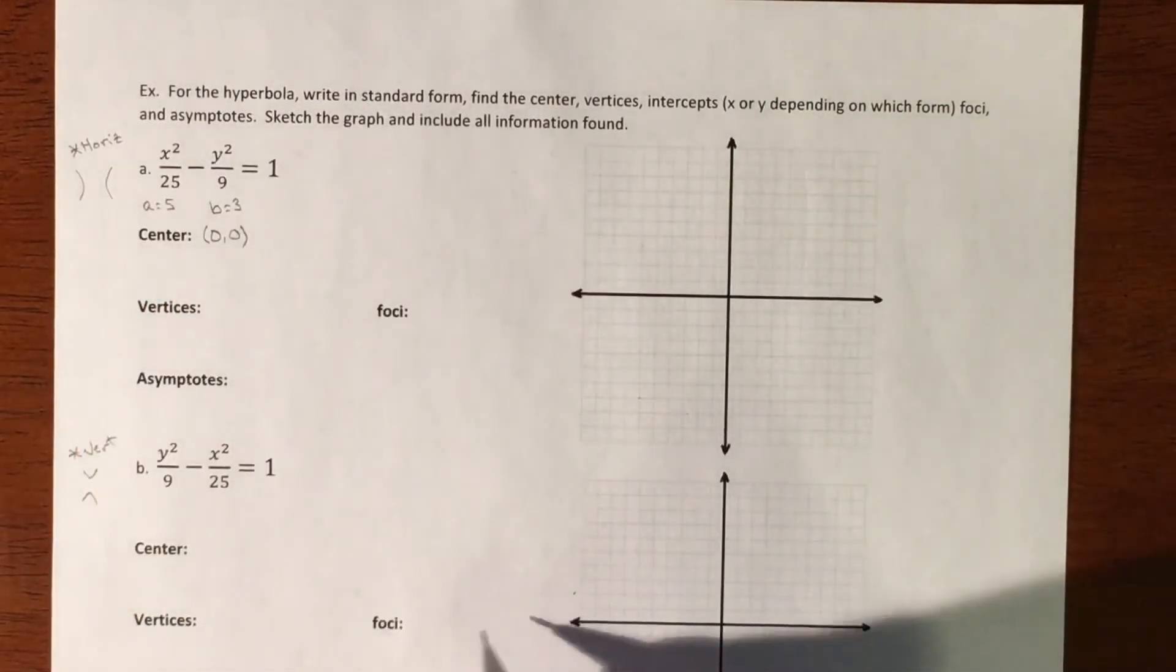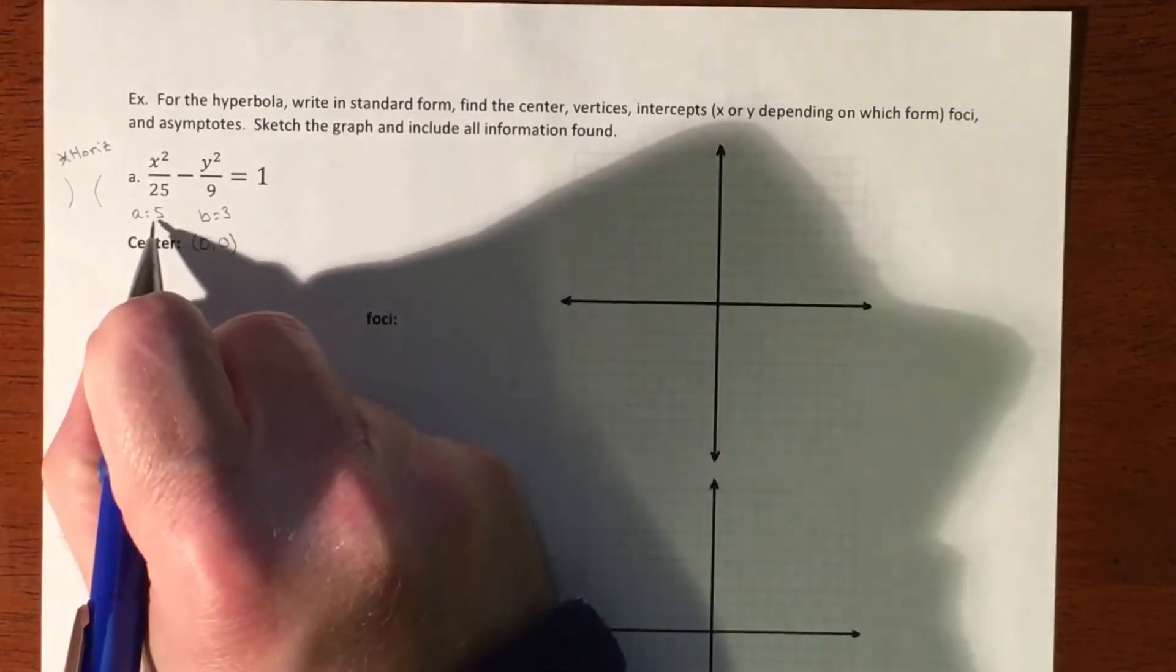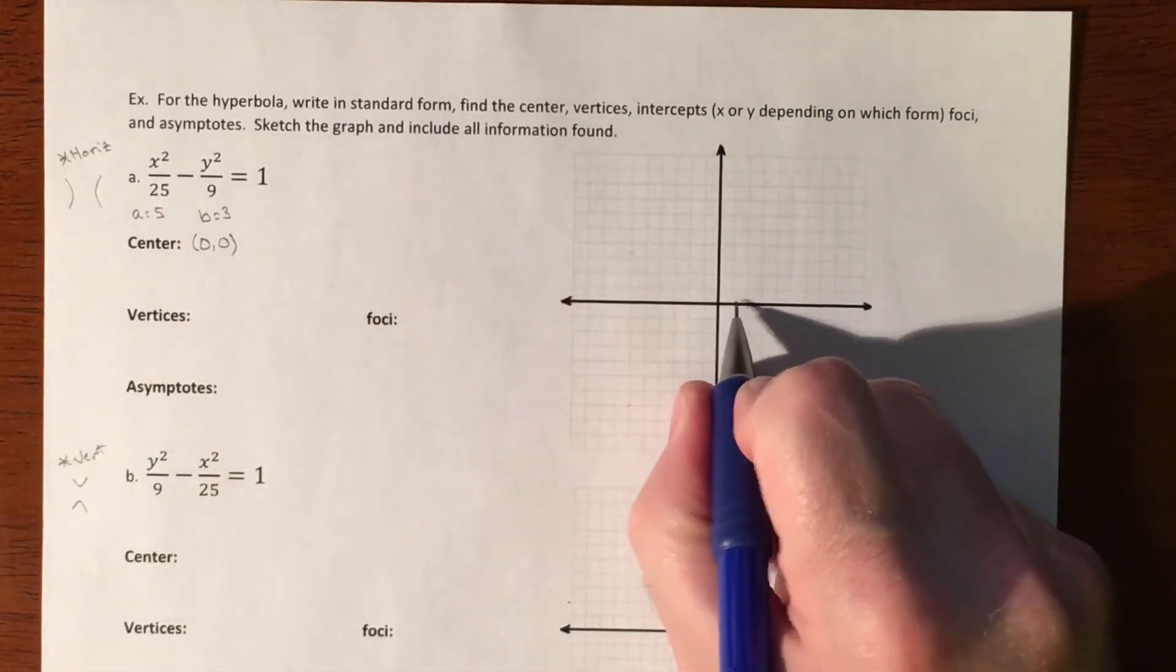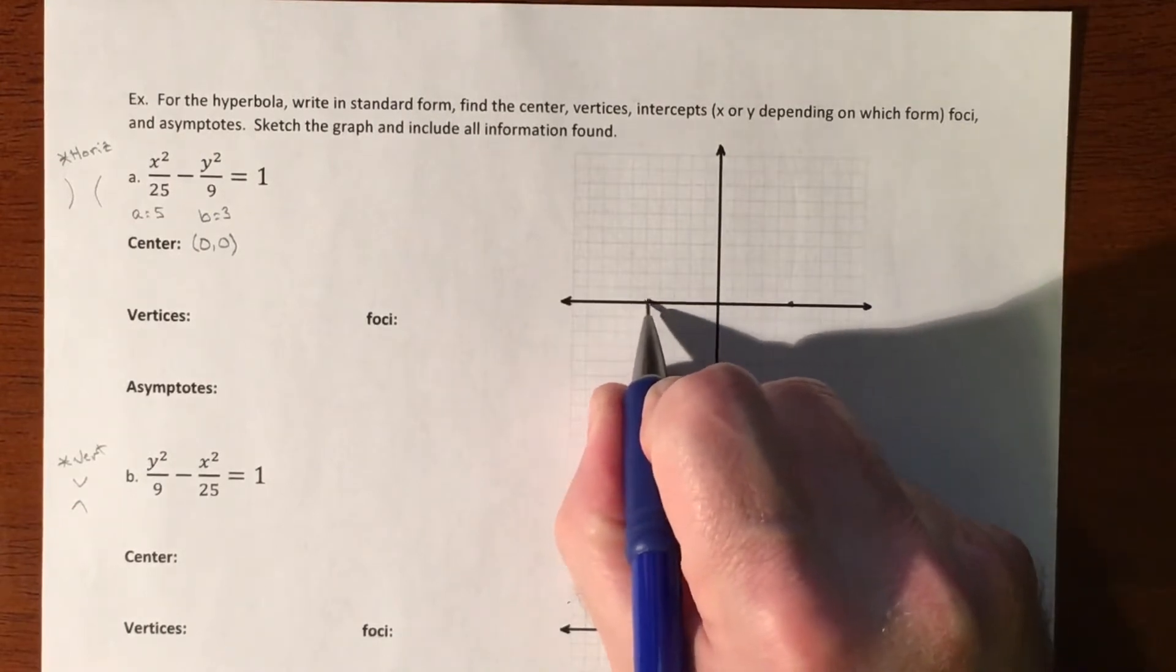And our vertices, we don't know. Let's put all the graph together. Our a value is 5, because a squared is 25. So from here, we're going to go 1, 2, 3, 4, 5, and 1, 2, 3, 4, 5.